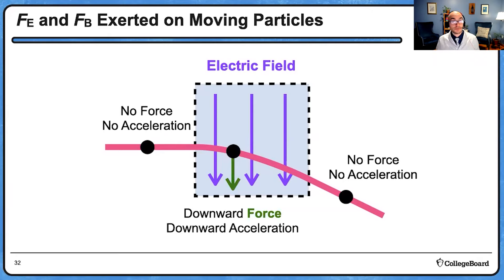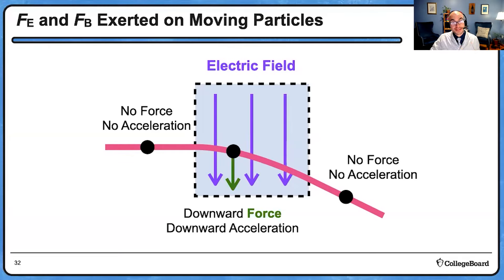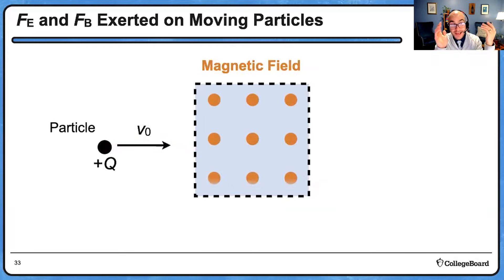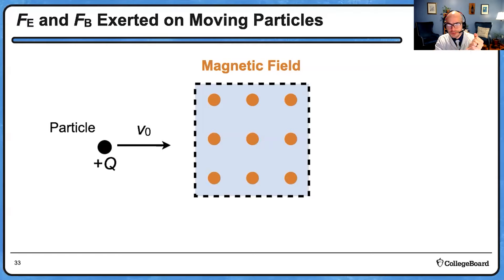Outside the field there is no force and no acceleration. When a charged object experiences electrical force, the force and acceleration are in the direction of the electric field. Now, that box might have a different kind of field — in this case, an outward magnetic field coming right at you, represented by dots. What will that path look like if the charged object moves through the magnetic field, entering with the same constant velocity v?